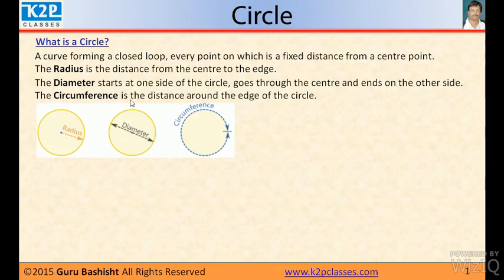The circumference is the distance around the edge of the circle. If you start from here and move on the circle and reach the same place, the distance you have covered is called circumference.